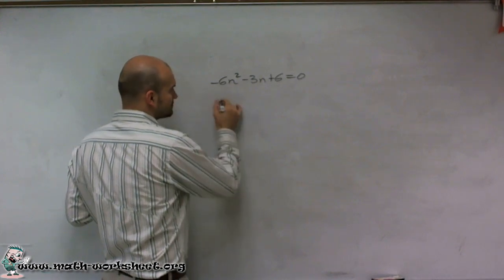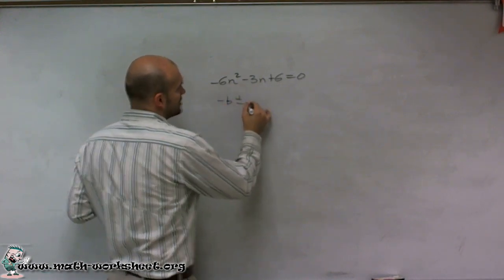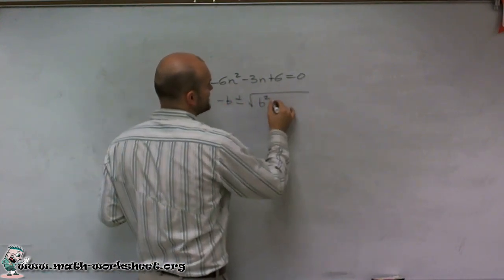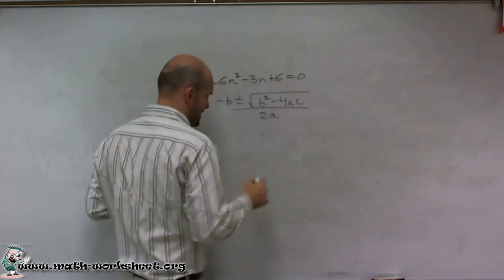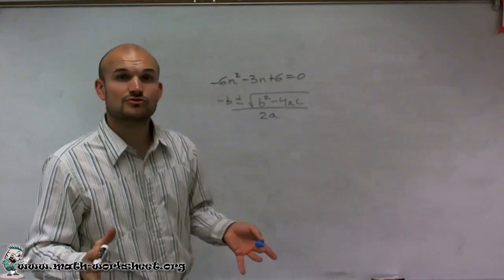The quadratic formula says opposite of b plus or minus the square root of b squared minus 4 times a times c all over 2a. Now, remember, we're just using the discriminant.